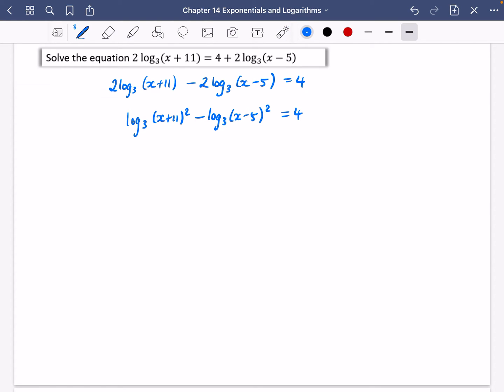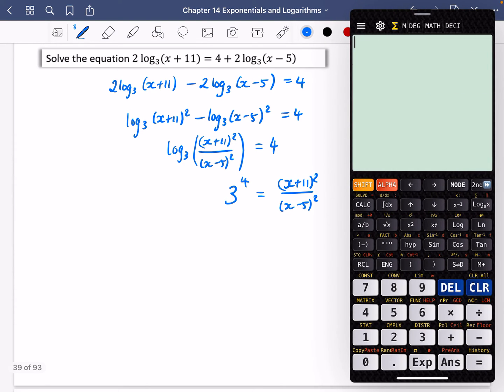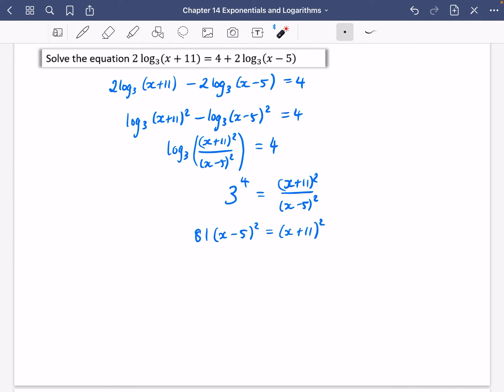Now, because they're being subtracted, I can divide them. So it's going to be log base 3 of (x+11)² divided by (x-5)² equals 4. OK, well, it doesn't look pleasant, but it's going to be perfectly OK to solve. We're saying the power of 3 that gives you (x+11)² over (x-5)² is 4. In other words, 3 to the power of 4, which is 81. So we get 81 multiplied by (x-5)² equals (x+11)². I also multiplied up by this (x-5)² here as well.